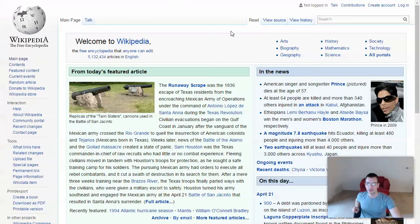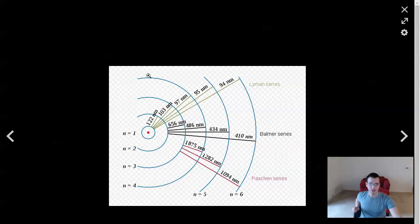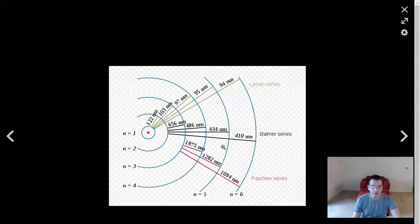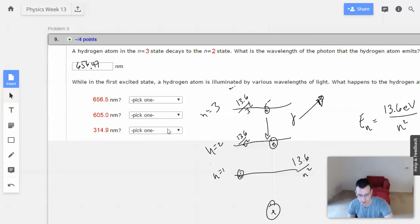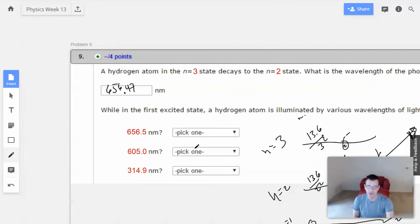So, the Balmer series is, I was just there. I was just there. I can go this way. The Balmer series. This guy. So, looking at this. So, we have 656.5. 656.5 is going to go from the second state to the third state. So, what happens to the hydrogen atom when illuminated by each wavelength?